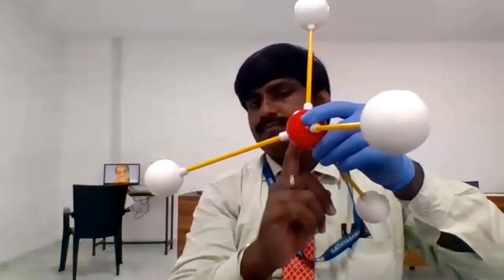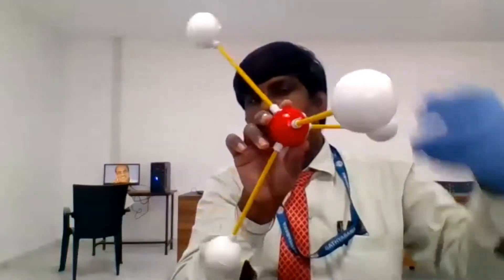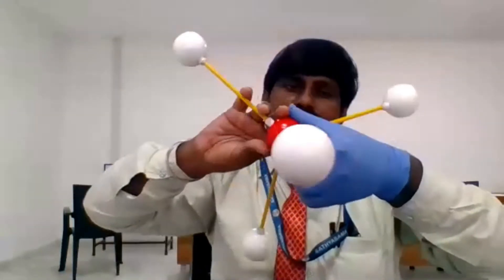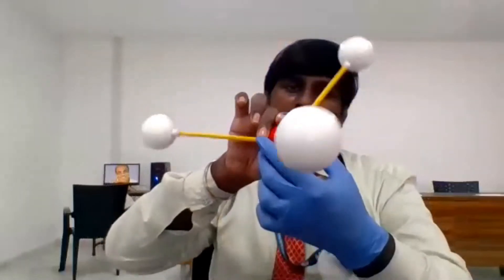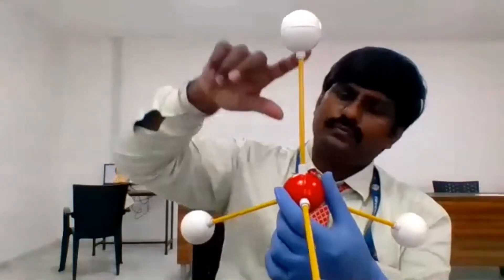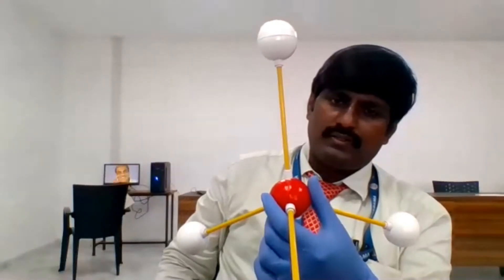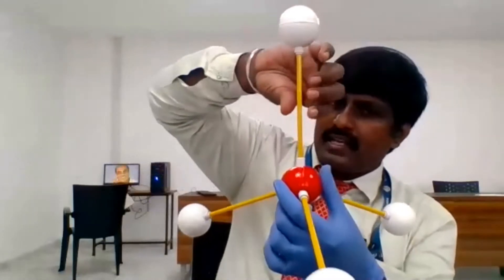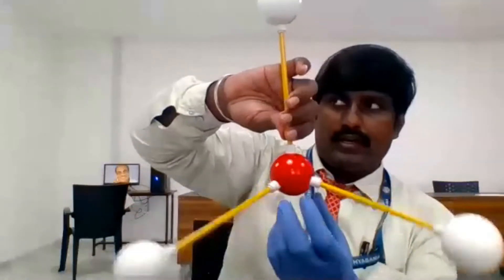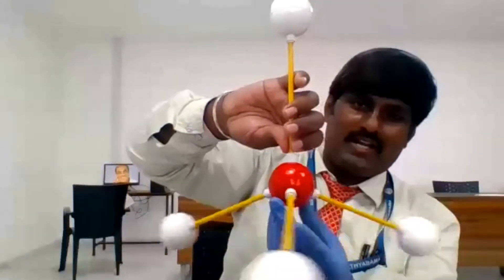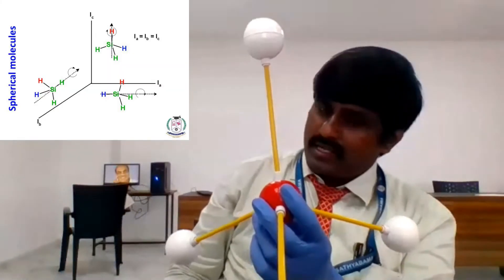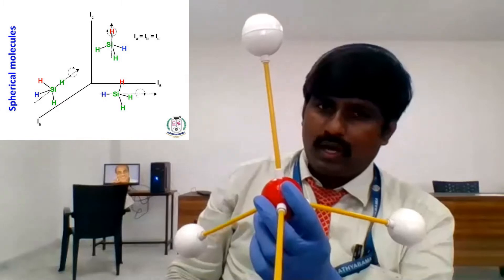Now let us go to i-b through this axis. This is i-b — the moment of inertia in the y-direction. And this is i-c. Now let us compare i-a, i-b, and i-c. All are equal.